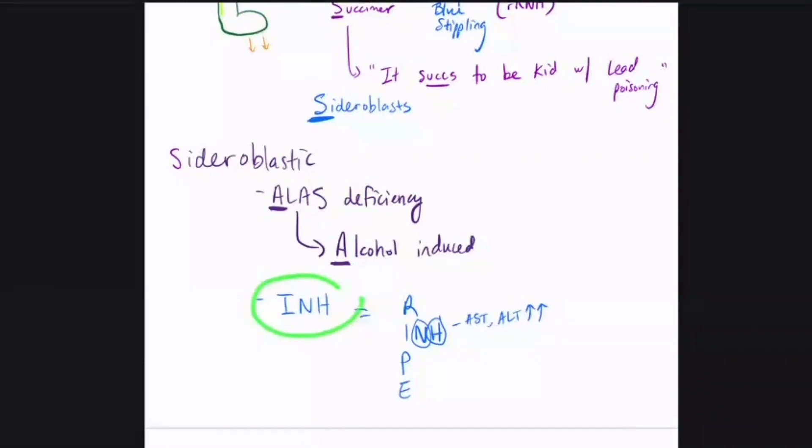The anemia is because they have tuberculosis and they're getting treated with RIPE therapy, which includes isoniazid, and now they have sideroblastic anemia.